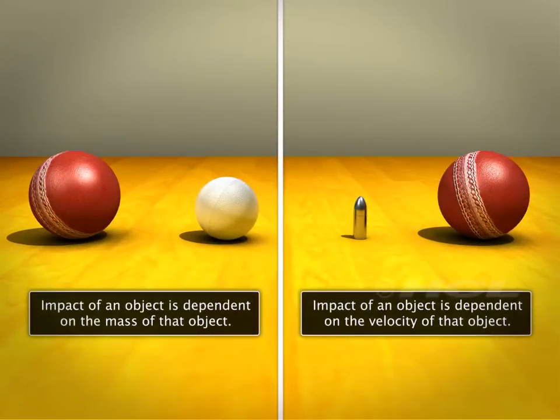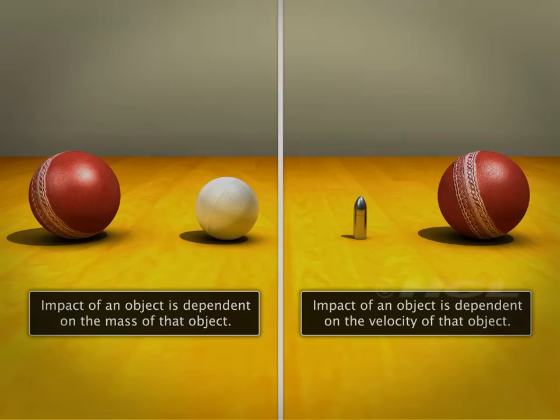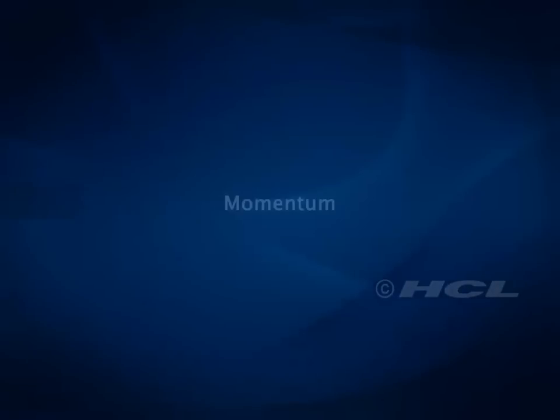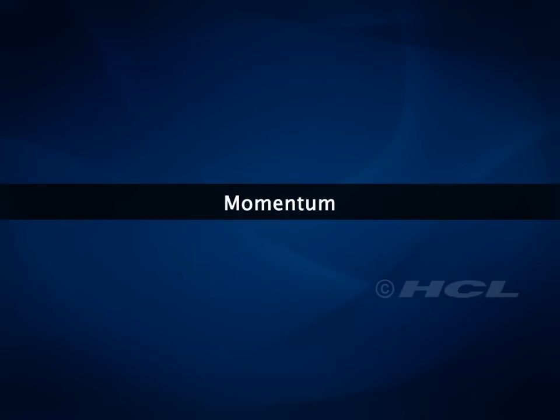These observations suggest that the impact produced by objects depends on their mass and velocity. These observations were used by Newton to introduce a property called momentum.